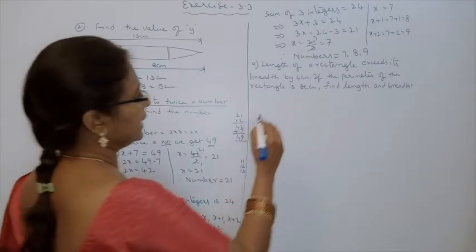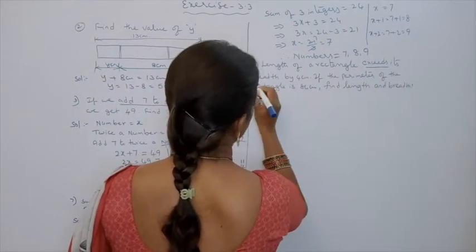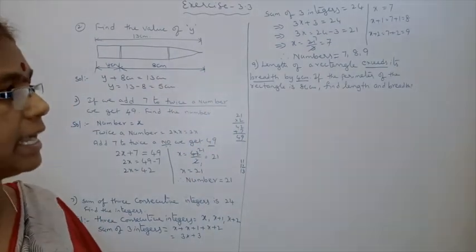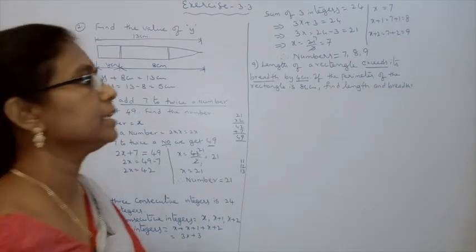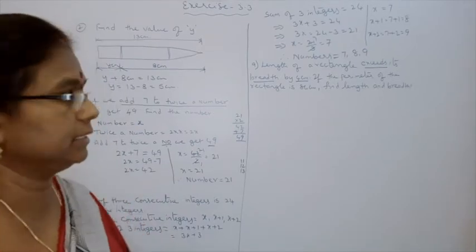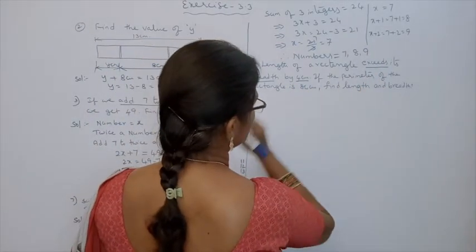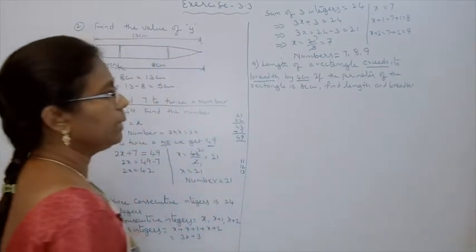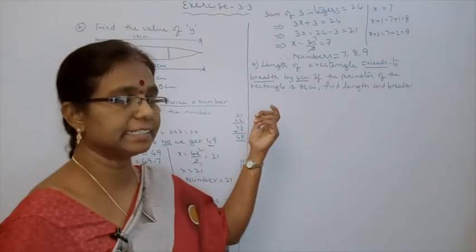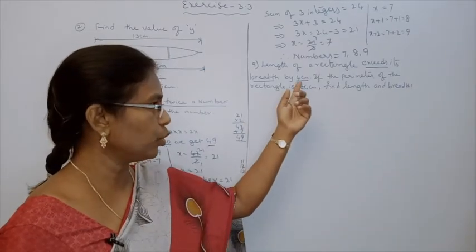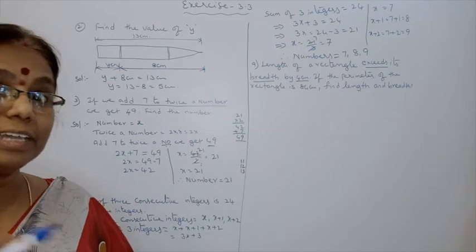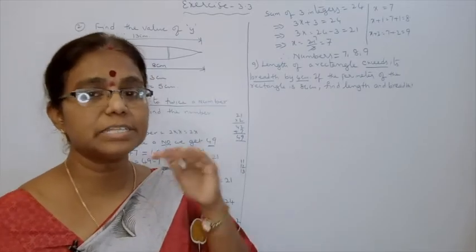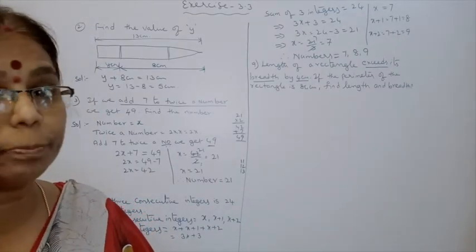Next: length of a rectangle exceeds its breadth by 4 cm. What is the meaning of exceeds? Exceeds means more. Always, the length of a rectangle is more than the breadth. If the perimeter of the rectangle is 84, find the length and breadth. Since the length always depends upon the breadth, we have to assume breadth as x.